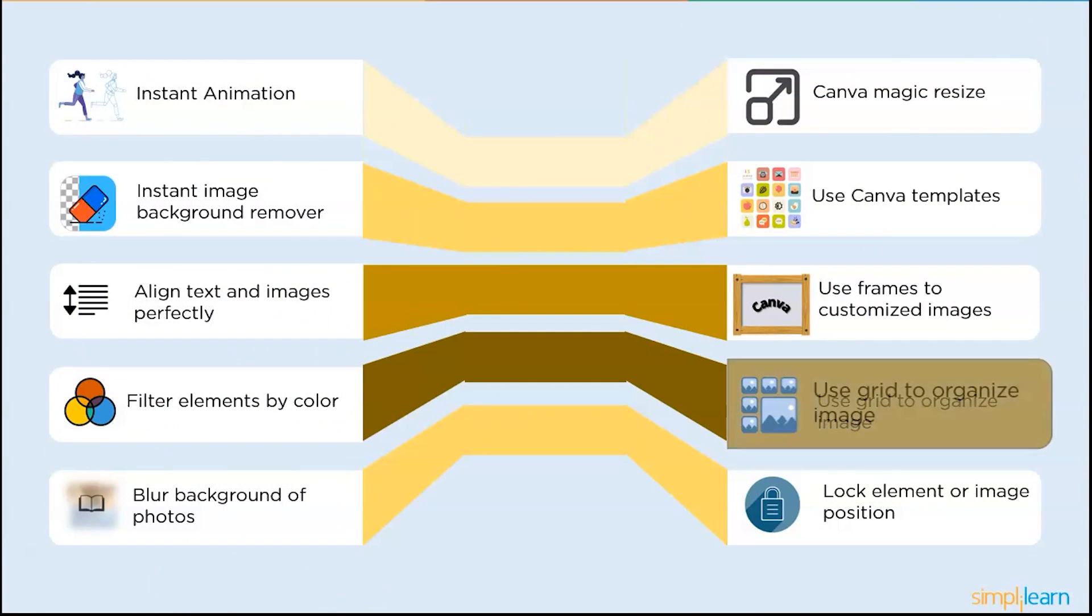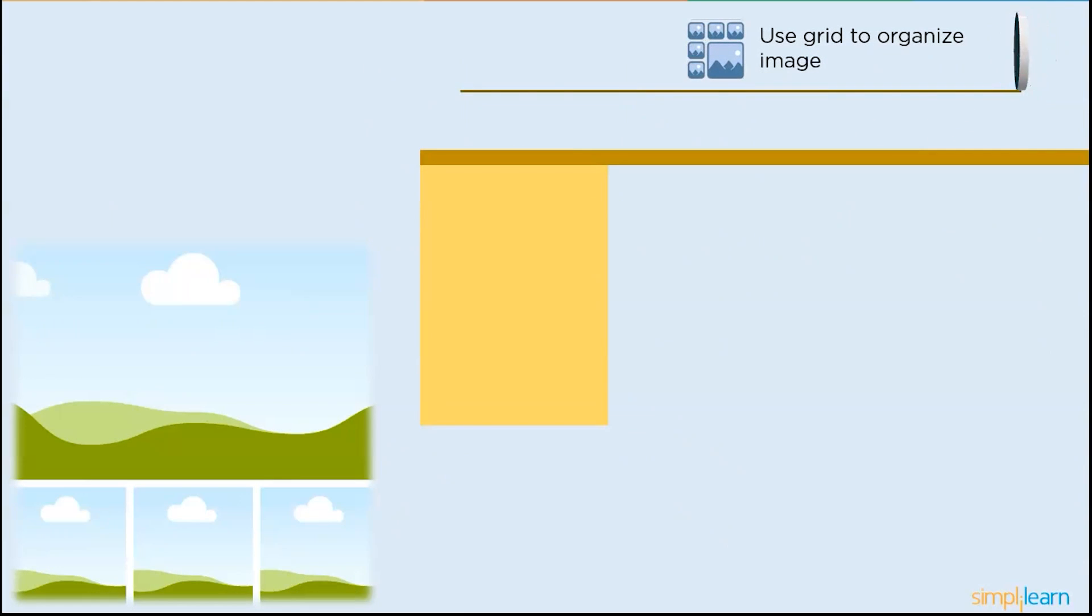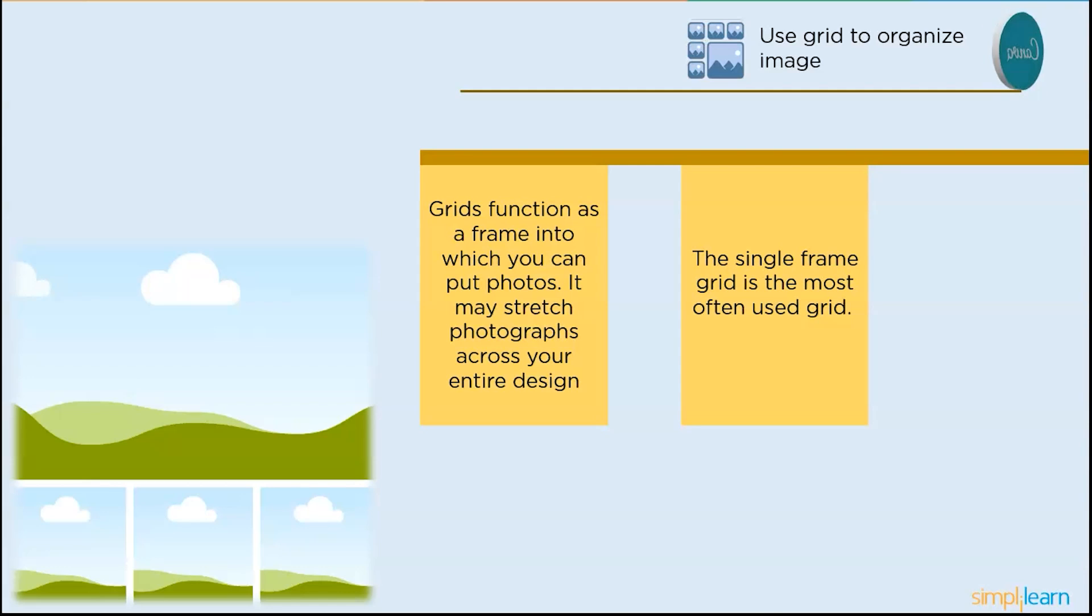So the next one is use grid to organize the images. In Canva, grid functions as a frame into which you can put photos. It may stretch photographs across your entire design and group several images or small images in a composition. The single frame grid is the most often used grid. You should always include one of these squares into your designs if you use an image as a background or backdrop. If you do, you can drag and drop various photographs while keeping their own filter codes or effects.